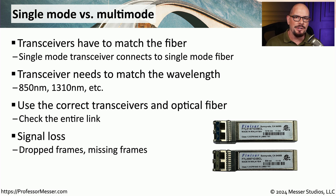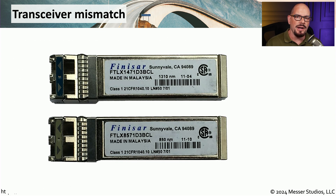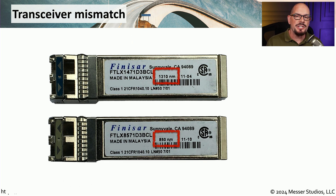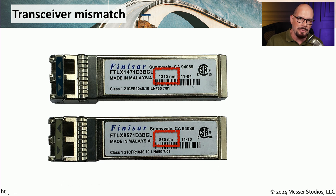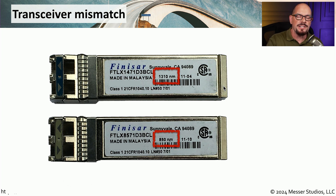If the transceivers don't match, you will undoubtedly have signal loss, resulting in increasing error counters, loss of signal, or slowdown in overall network efficiency. If you grab a transceiver from your drawer and plug it in, you might be using the wrong one. These two transceivers look almost identical at first glance, but the wavelengths are marked in very small numbers, easy to miss when plugging into a switch. Once plugged in, you can no longer read the markings on the side — you may need to check the switch specifications or physically remove the transceiver to read the label.